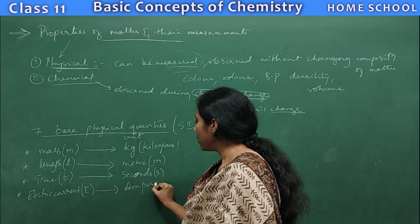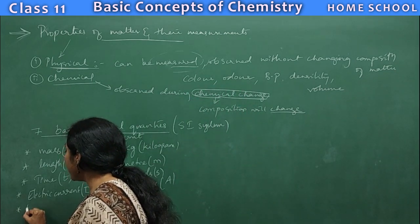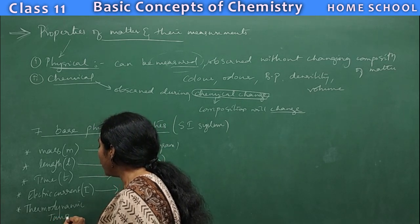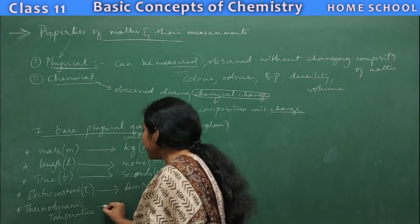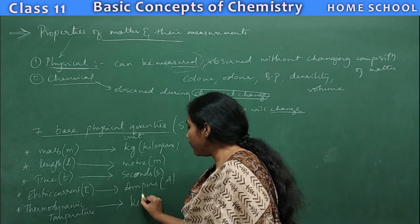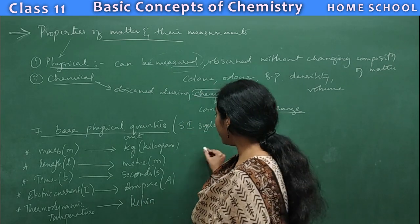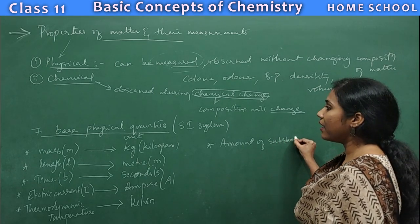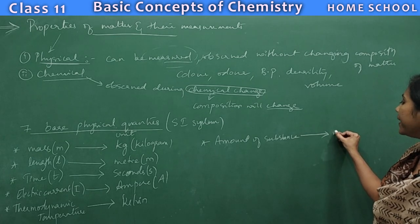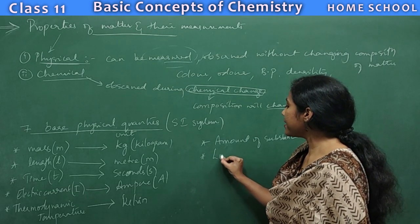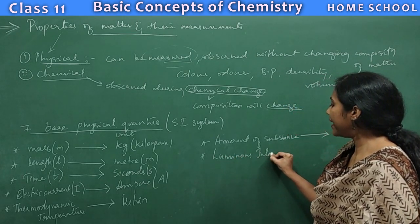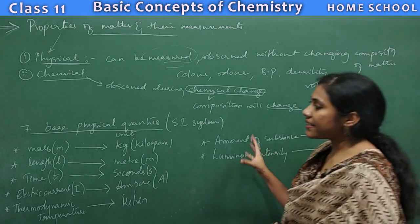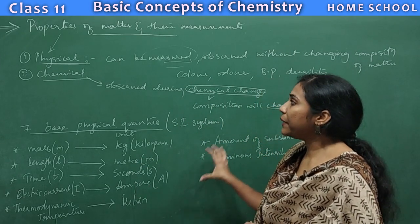The fourth base quantity is electric current, indicated with i, and its unit is ampere, indicated as A. The fifth is thermodynamic temperature — a new word, whose meaning you will understand a little later — and its unit is kelvin. The sixth is amount of substance, measured with the unit mole. The seventh is luminous intensity, whose unit is candela.